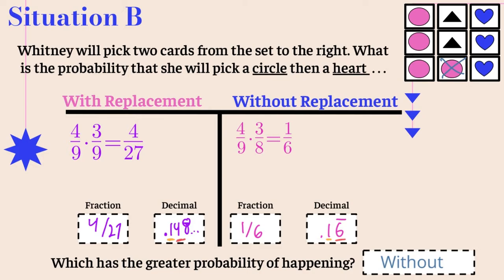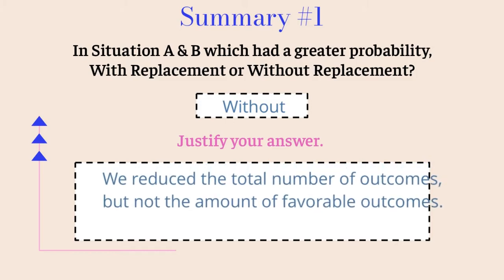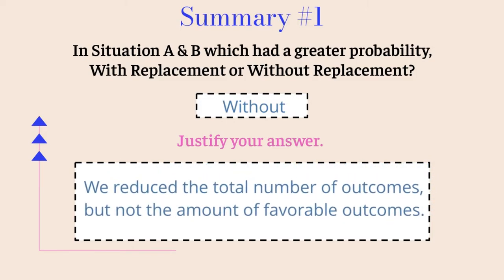Let's summarize. In situations A and B, without replacement had the greater probability. The reason is that with dependent probability, we reduced the total number of outcomes, but we did not reduce the number of favorable outcomes. We never removed any chances of getting what we wanted — we only removed outcomes we didn't want. Taking away unfavorable outcomes gave us a better chance.